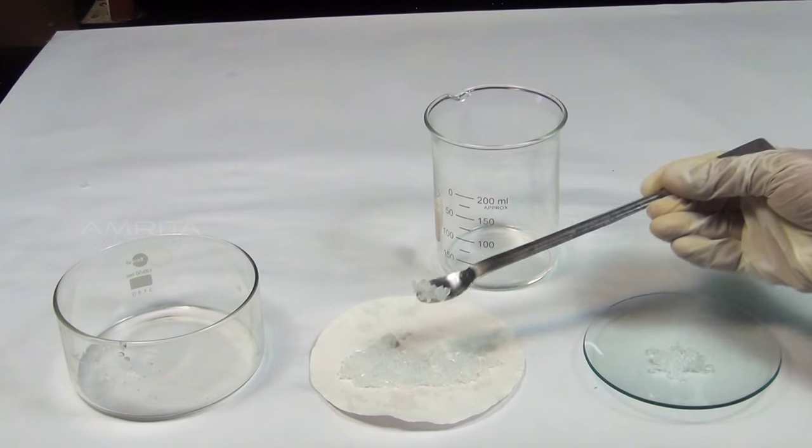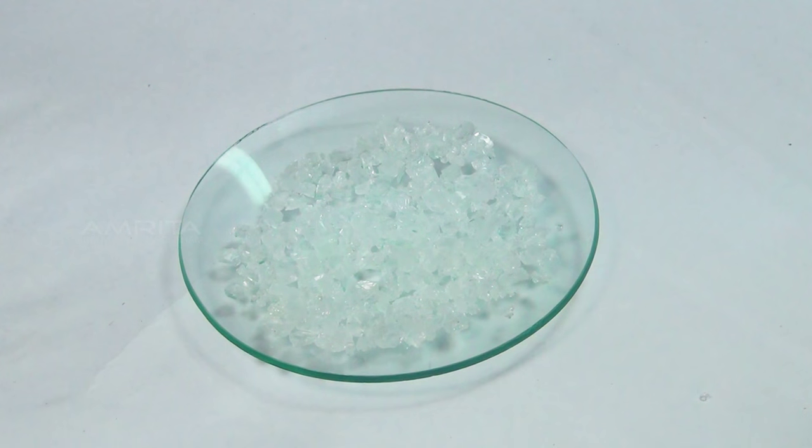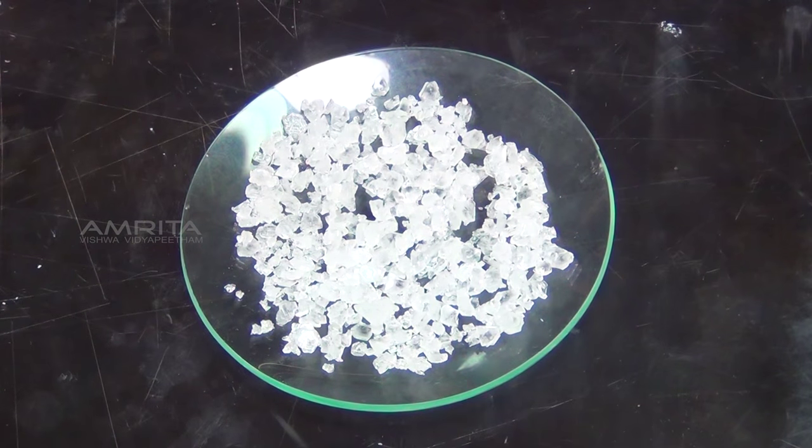Now, transfer the crystals into a watch glass. The crystals of pure potash alum are colourless and are octahedral in shape.